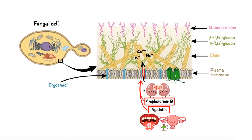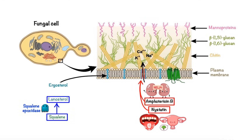Besides targeting ergosterol itself, many other antifungal drugs have been designed to target enzymes involved in ergosterol biosynthesis. Ergosterol biosynthesis in fungi utilizes a compound called squalene as a starting material. In the presence of an enzyme called squalene epoxidase, squalene is transformed into lanostrol, which in the presence of a cytochrome P450 enzyme called 14-alpha demethylase is subsequently converted to ergosterol.